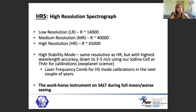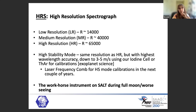The High Resolution Spectrograph HRS has four modes: lower resolution, medium resolution, higher resolution, and a high stability mode. The high stability mode achieves the same resolution as the high resolution mode but with the highest wavelength accuracy — down to about three to five meters per second using either an iodine cell or thorium-argon for calibrations. We are also getting a laser frequency comb for calibrations. HRS is now the workhorse during full moons and has a fully data-reduced pipeline.